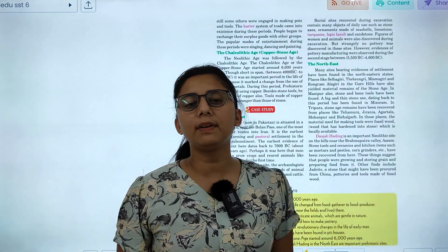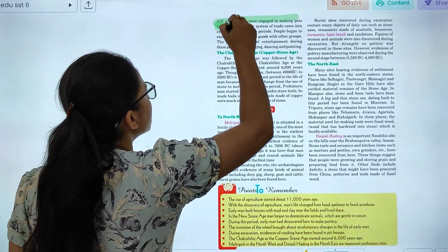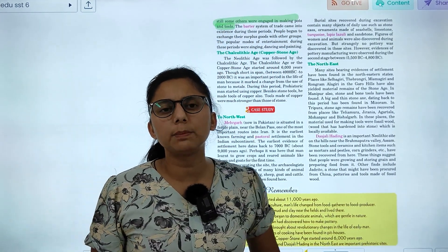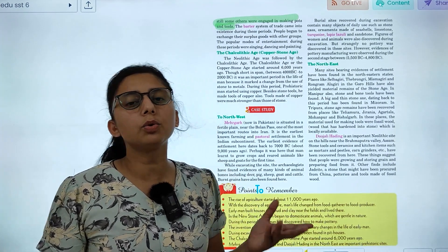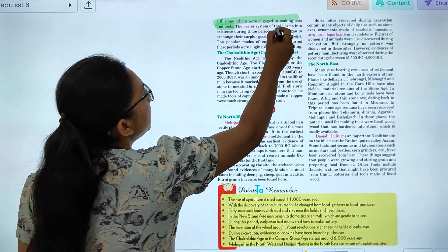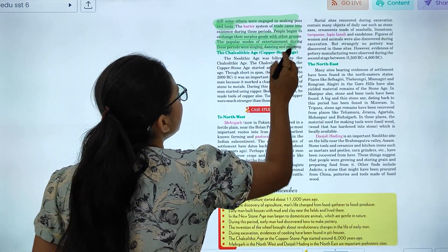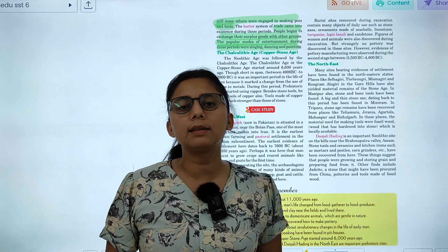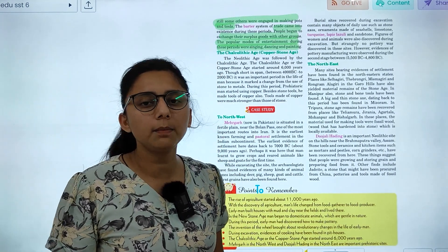He made rules and regulations which were obeyed by others. Some were cultivating fields. And some others were engaged in making tools. There was a barter system. The trade was a barter system. There was no money. People began to exchange surplus goods. And the popular mode of entertainment during this period, they were singing, dancing, painting.